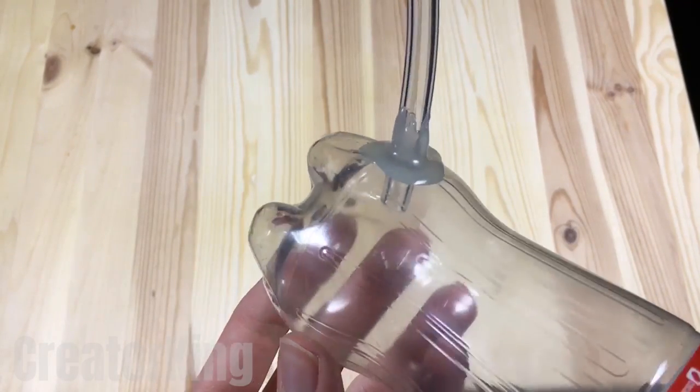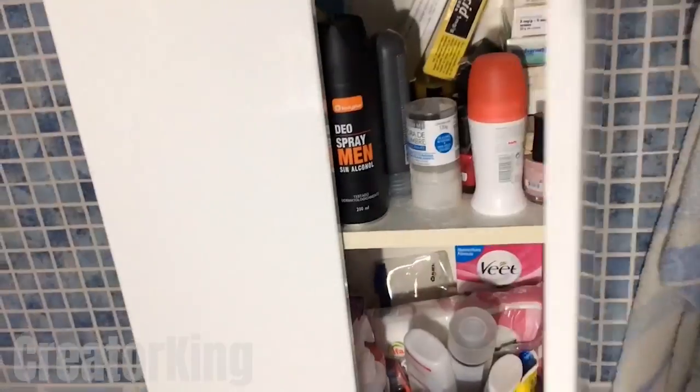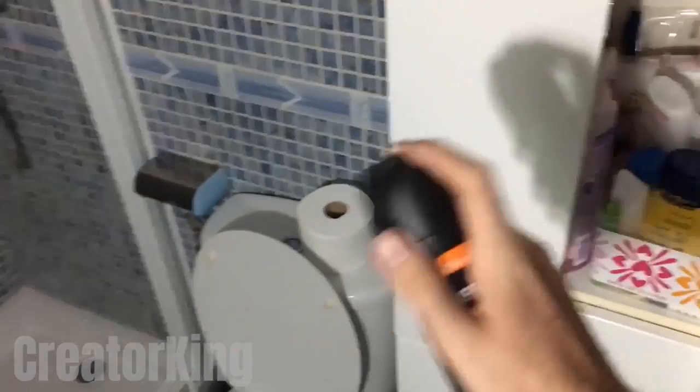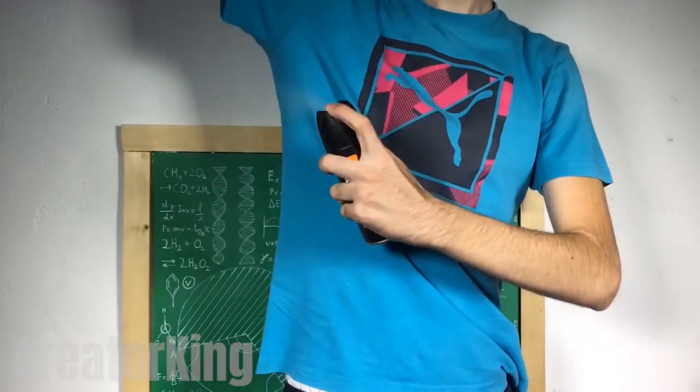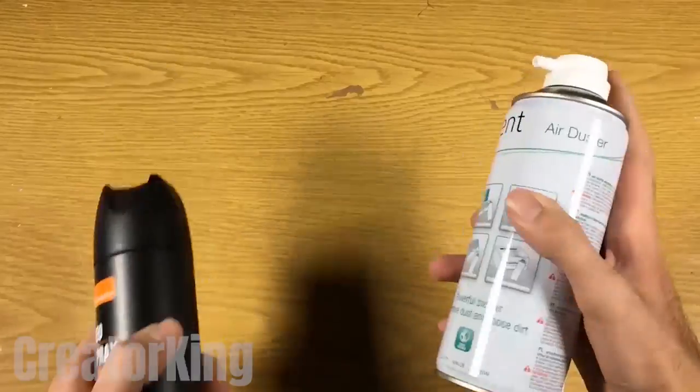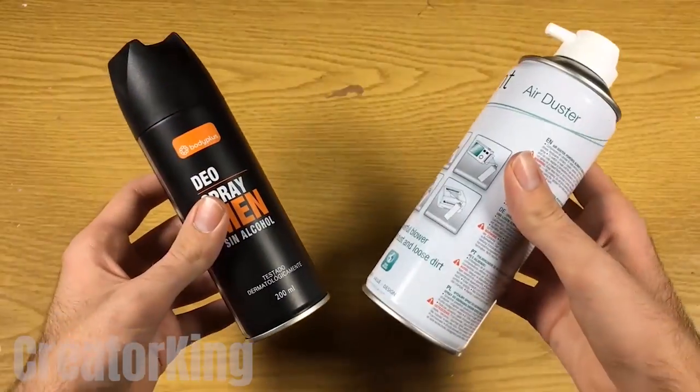We will need some aerosol, deodorant, compressed air, or any product that is gaseous and packaged under pressure. First, I'll try the deodorant, but before that, I'll put some on in case I run out with this invention. On second thought, I'll use a bottle of compressed air to save on deodorant. Connect the hose to the nozzle of the air container.